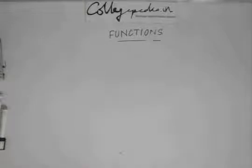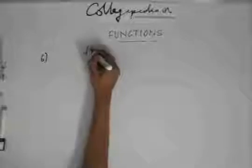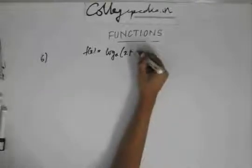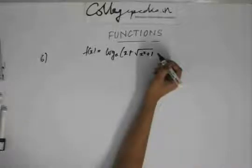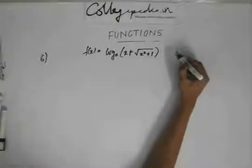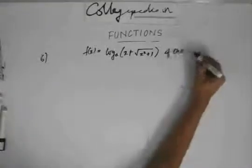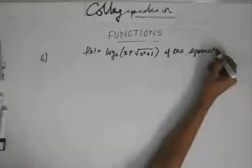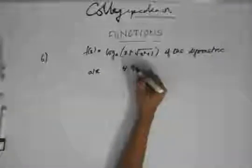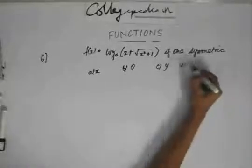Next we move on to the sixth question. The function is f(x) = log(x + √(x² + 1)), and I am asked about which axis or point this function is symmetric about. The options are: the x-axis, the origin, the y-axis, or symmetric about the line y = x.